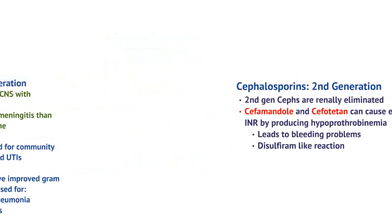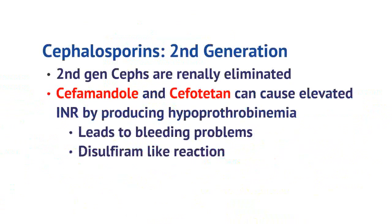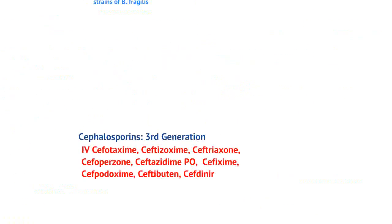Second gen cephalosporins are renally eliminated and need to be adjusted if someone has acute kidney injury or chronic kidney disease. Cefamandole and cefotetan also interact with other medications — they can cause an elevated INR by producing hypoprothrombinemia. For patients on Coumadin, this may affect their monitoring and can cause bleeding problems. Note that these medications can also cause a disulfiram-like reaction, so patients who drink alcohol should be aware of that.